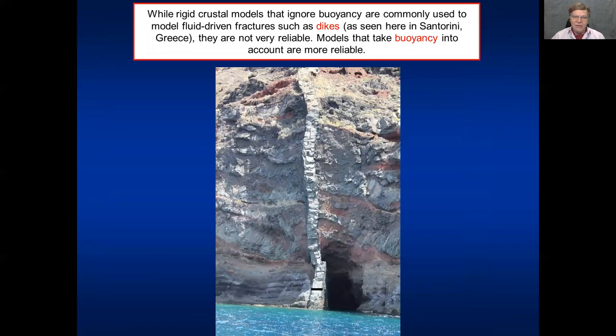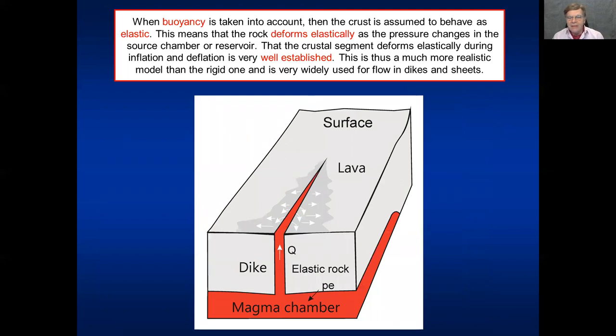So we can use the rigid crustal model for dikes, like here in Santorini. But those models are not very reliable. Much better to take into account buoyancy, where in fact we are dealing with an elastic crust. So when buoyancy is considered, as we basically should, it means that when the pressure changes here in the magma chamber, the crust deforms elastically. And we have plenty of evidence from measurements in active volcanoes, that when there is an inflation or deflation, the crust to a first approximation deforms in an elastic manner. So this model here, where buoyancy is taken into account, should really be used. That is the much more reliable one than for rigid crust.